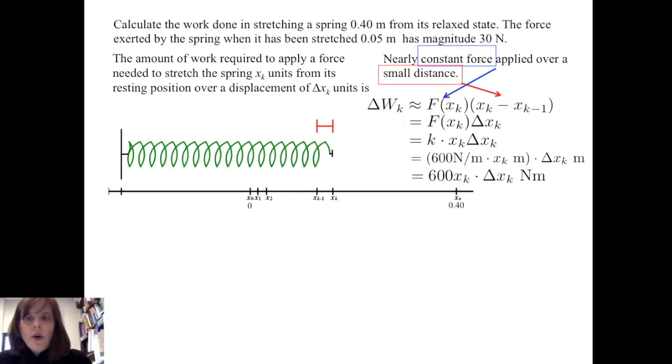Since I know that the force is that spring constant k times xₖ, I can rewrite the amount of work done over the small distance to be approximately 600xₖ times Δxₖ and our units are newton-meters.